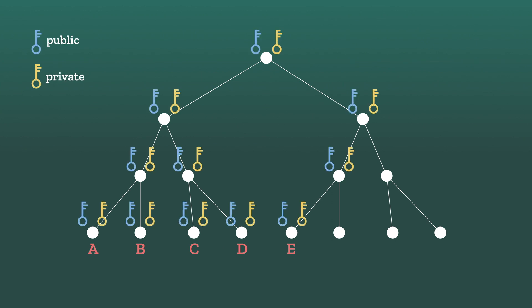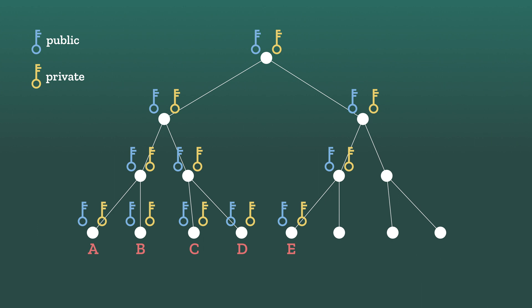The public keys are, well, public — known to everyone in the group. But the private keys are only known to the members of the group that are descendants of the node. So Alice knows these private keys, but not these. And Edith knows these private keys, but not these. It's important to note that in the MLS structure, the intermediate nodes don't really represent anything in particular — it's just a way for us to organize all of these keys. Every member of the group keeps track of this structure locally, so they all need to be informed of any changes.